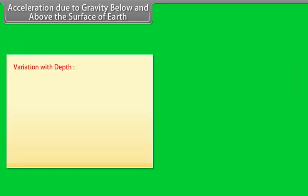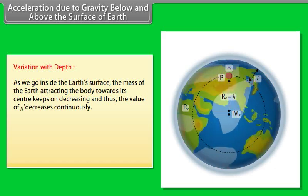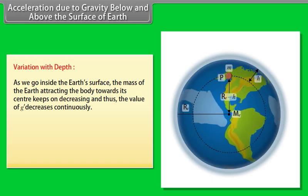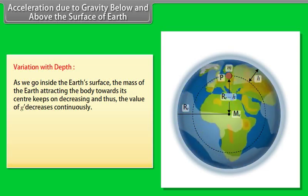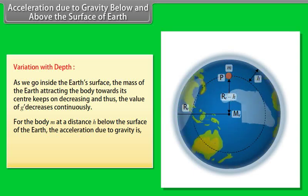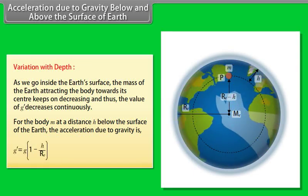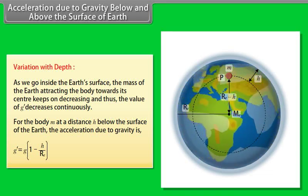Variation with depth: As we go inside the earth's surface, the mass of the earth attracting the body towards its center keeps on decreasing and thus the value of g decreases continuously. For the body m at a distance h below the surface of the earth, the acceleration due to gravity is g dash is equal to g multiply by 1 minus 2h upon r e.